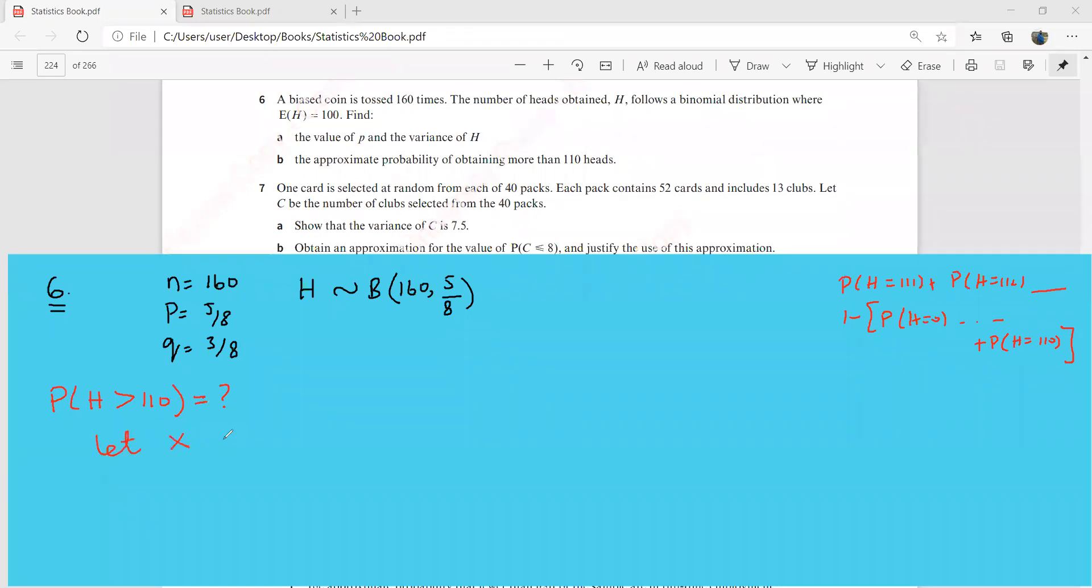So we have to approximate this binomial distribution as a normal distribution. So now let's say I can introduce x over here. X is normally distributed. So when I say normally distributed, I need to arrange for the mu and the variance. And luckily we remember these formulas. Mu is NP and the variance is NPQ. We know these formulas. So NP, that is going to be 160 times this 5 by 8.